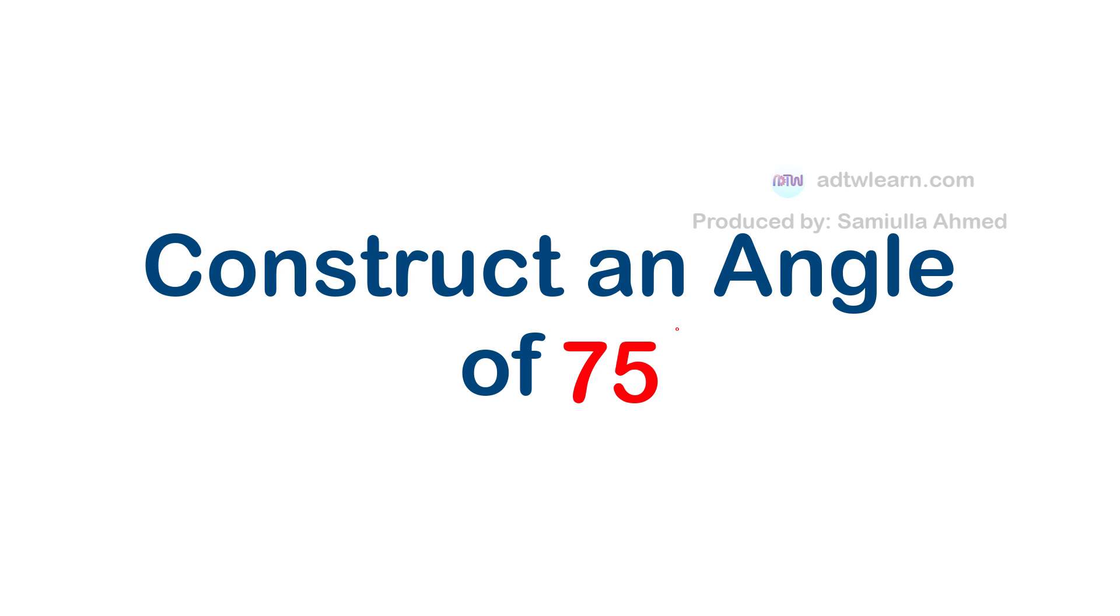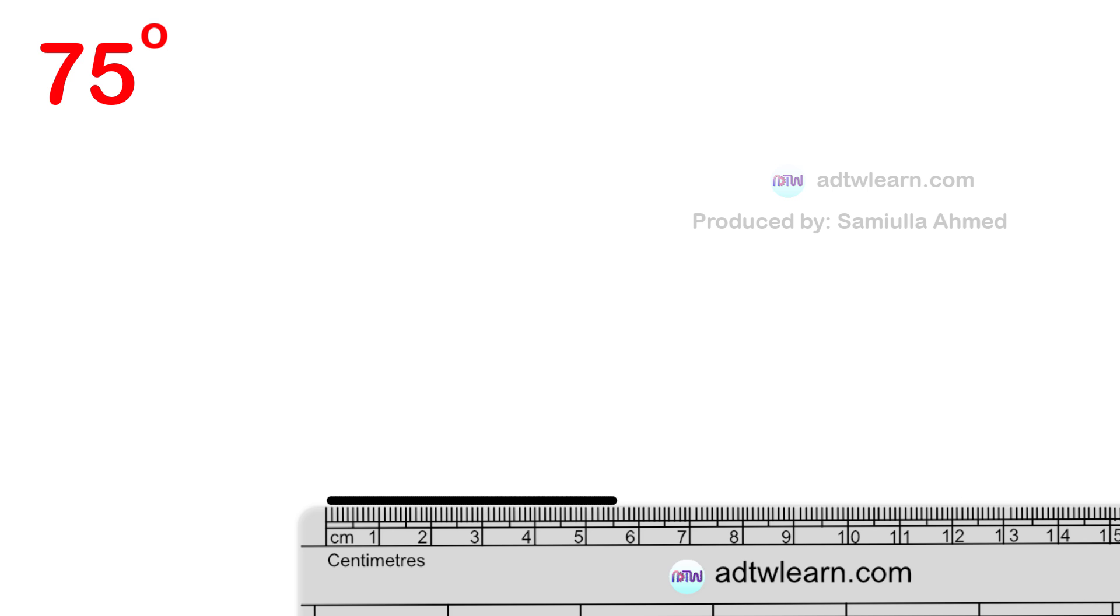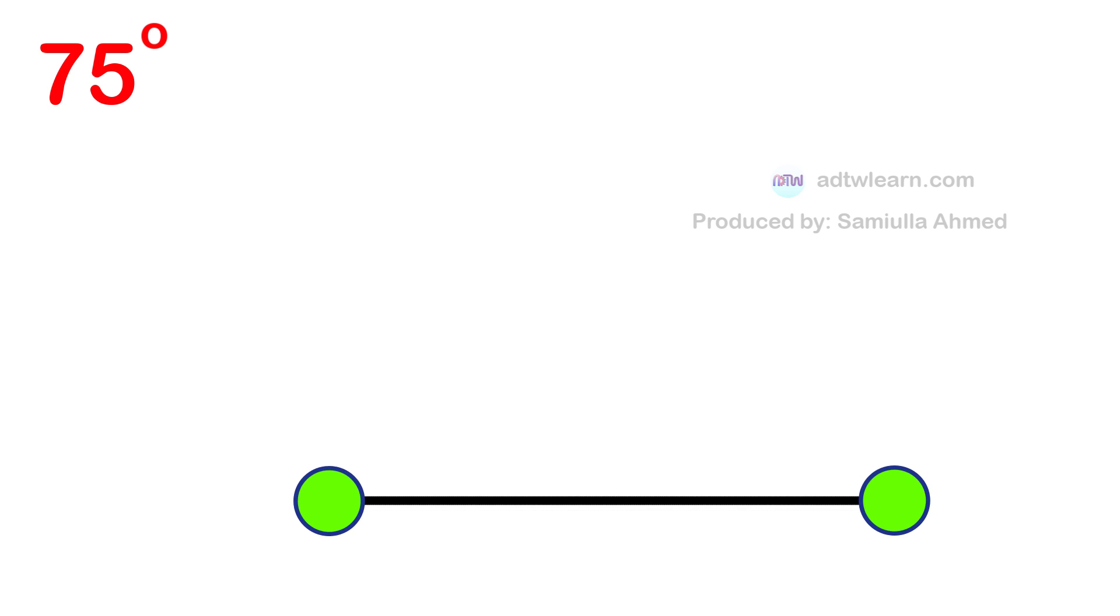Construct an angle of 75 degrees. In this video we will see how we can construct an angle of 75 degrees using a compass. Take a ruler and draw a horizontal line and label the endpoints of this line as A and B.